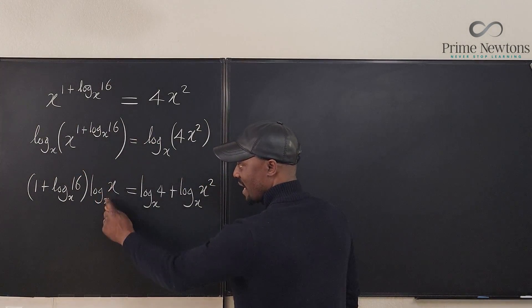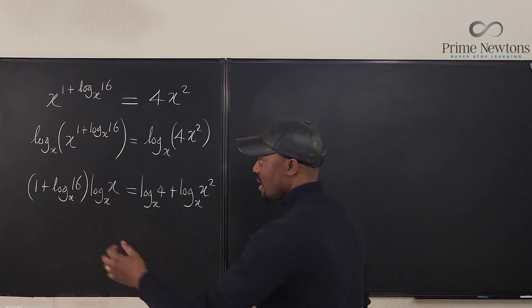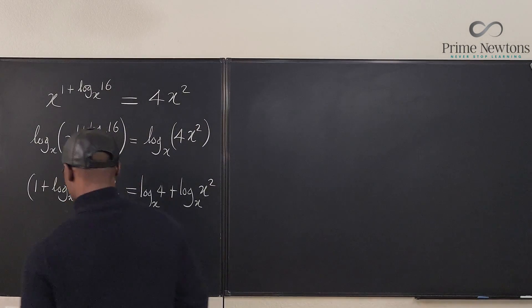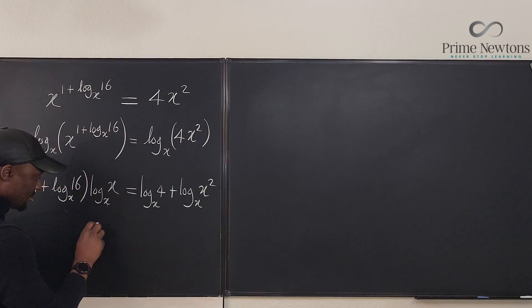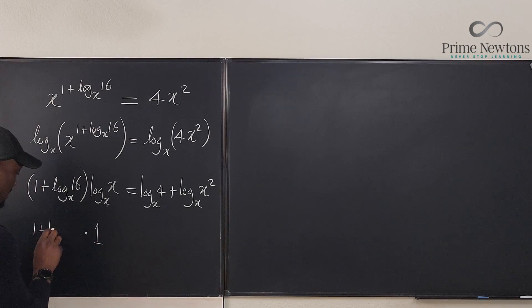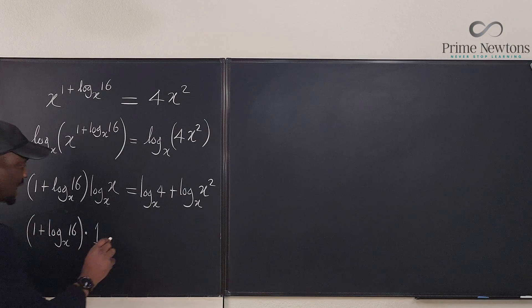But we know that log base x of x is just 1. So what I have left—let's write it here—is times 1. What I have here is 1 plus log base x of 16, multiplying 1.